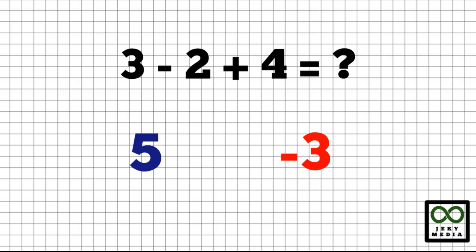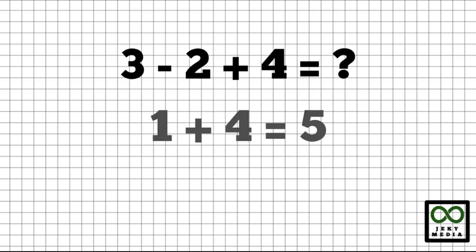Another example: 3 minus 2 plus 4. You choose: 5 or negative 3? Subtracting, 3 minus 2 is 1. Plus 4 will give you 5.